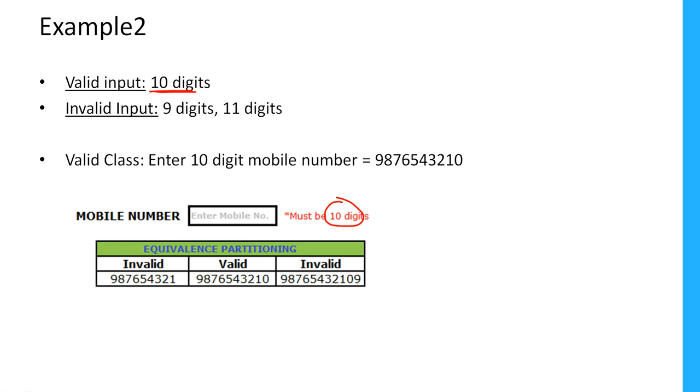If I do the equivalence partitioning technique, only 10 digits are valid input. What is the invalid input? 9 digits will not be allowed, 11 digits will not be allowed. So valid and invalid.